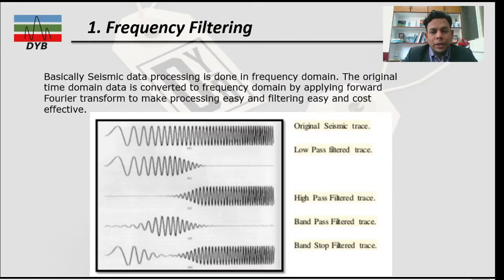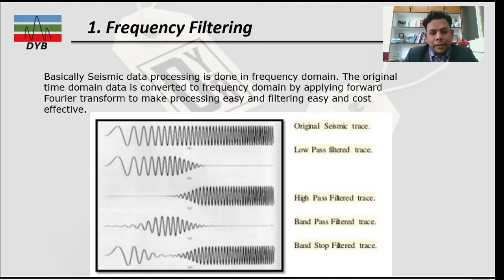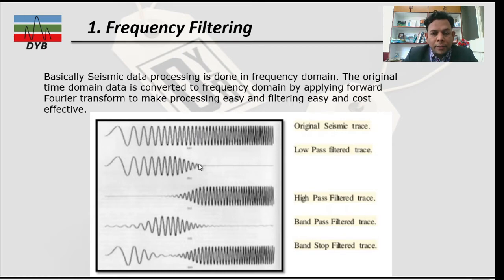Focusing on frequency filtering, seismic data processing is done in the frequency domain. The original time domain data is converted to the frequency domain by applying the Fourier transform to make processing, filtering, and cost effectiveness easier. In the time domain, it is not easy to remove certain bands of frequencies or preserve the required frequencies. Here is the first trace — the original seismic trace. If you don't need the high frequency data, you apply the low pass filter.